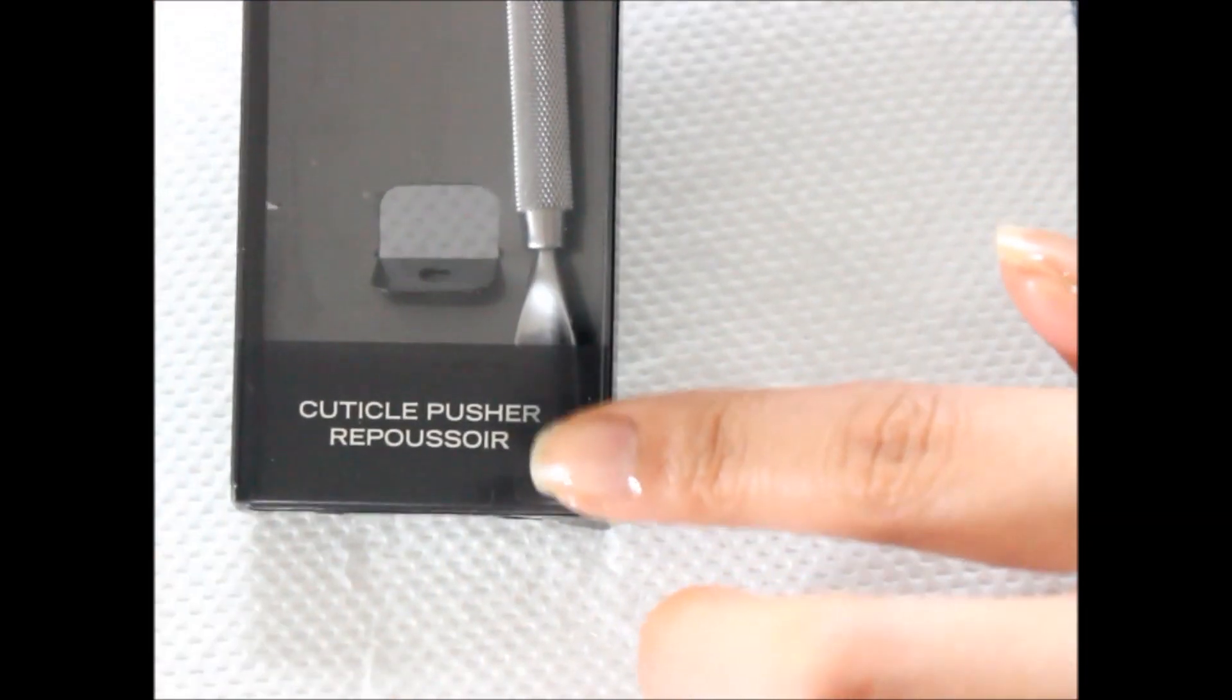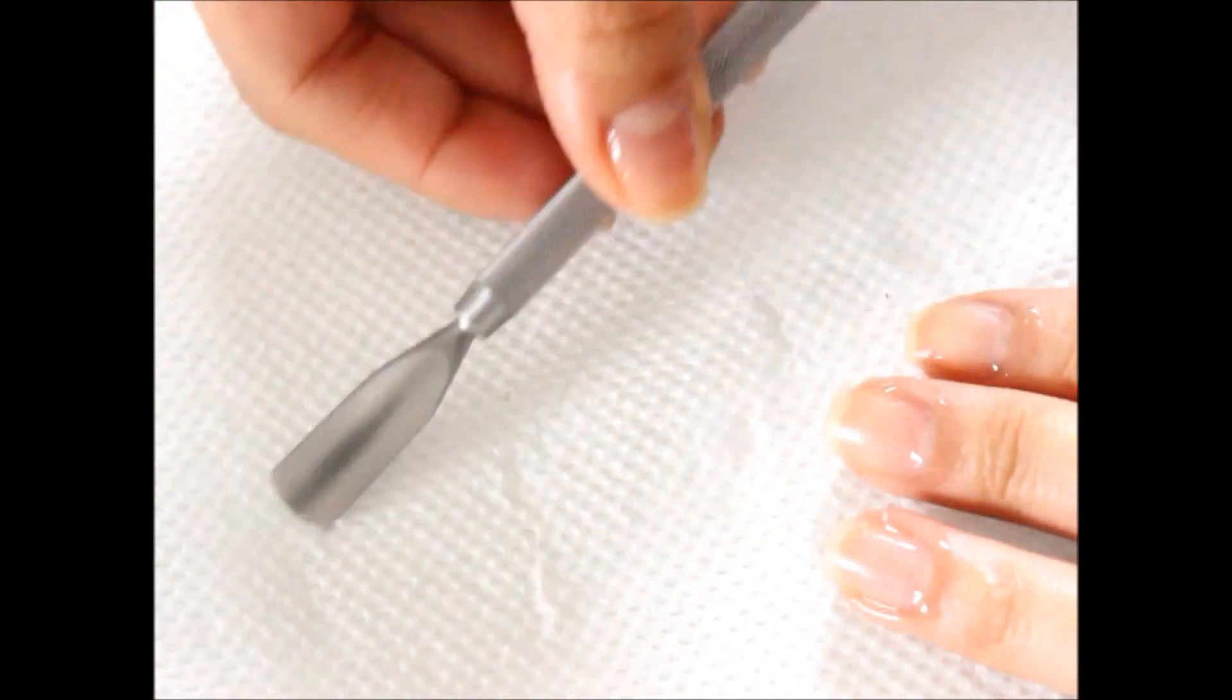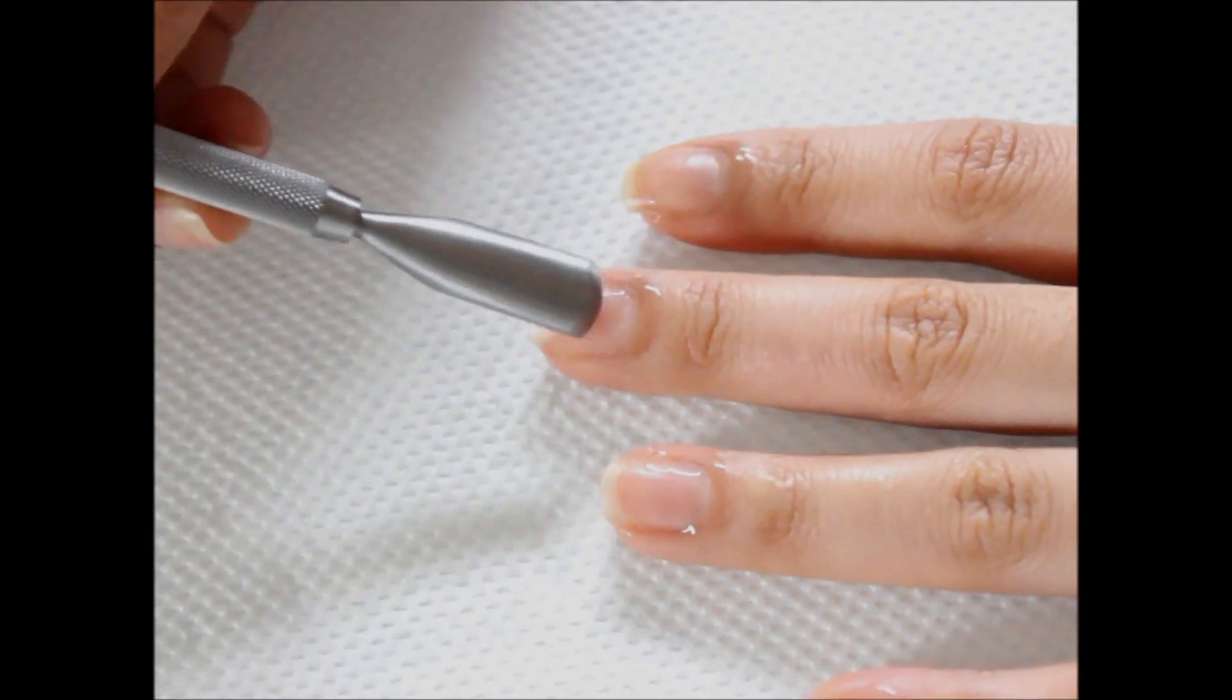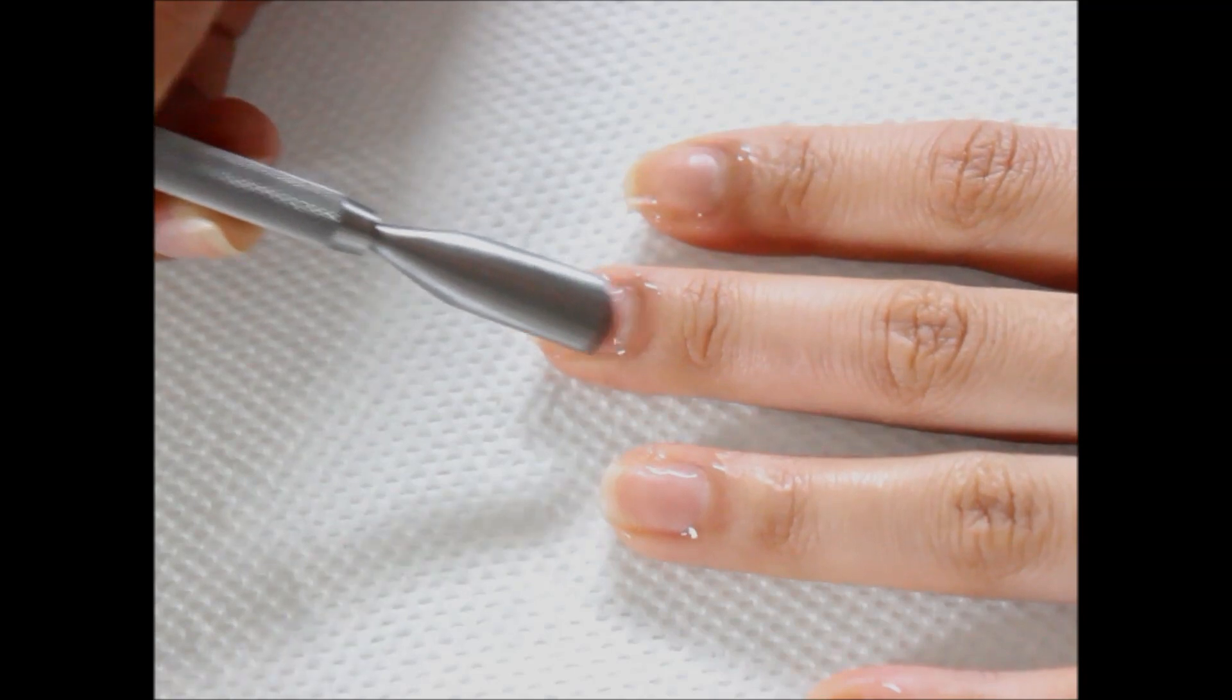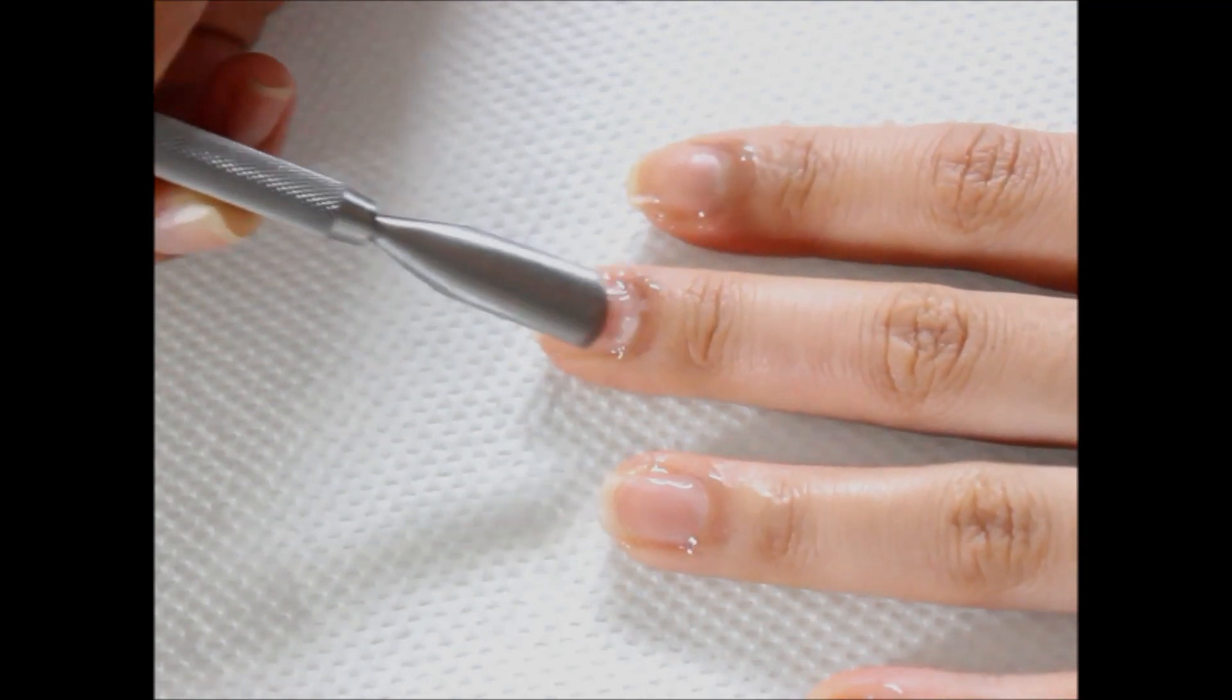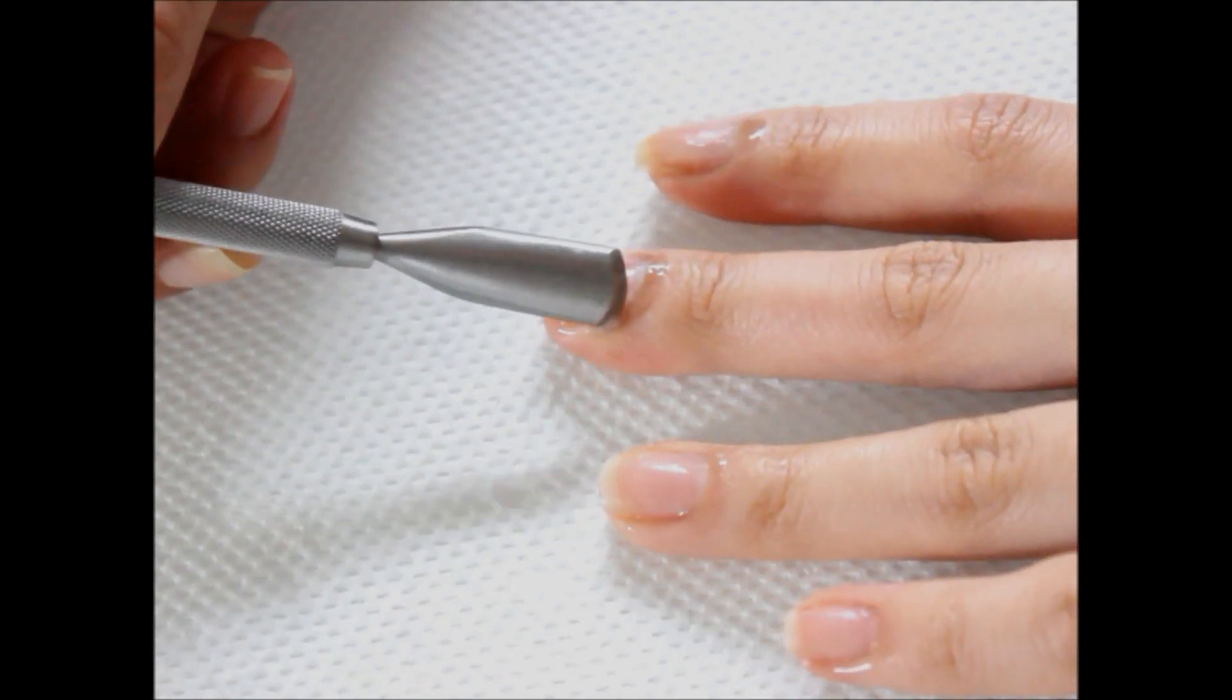I really enjoy using this metal cuticle pusher by Kuo but of course you can use the plastic ones or the orange sticks because they do the exact same job. So with very light pressure, I'm going to gently push away at my cuticles and you will slowly be able to see the cuticles being lifted off. It's quite amazing actually.